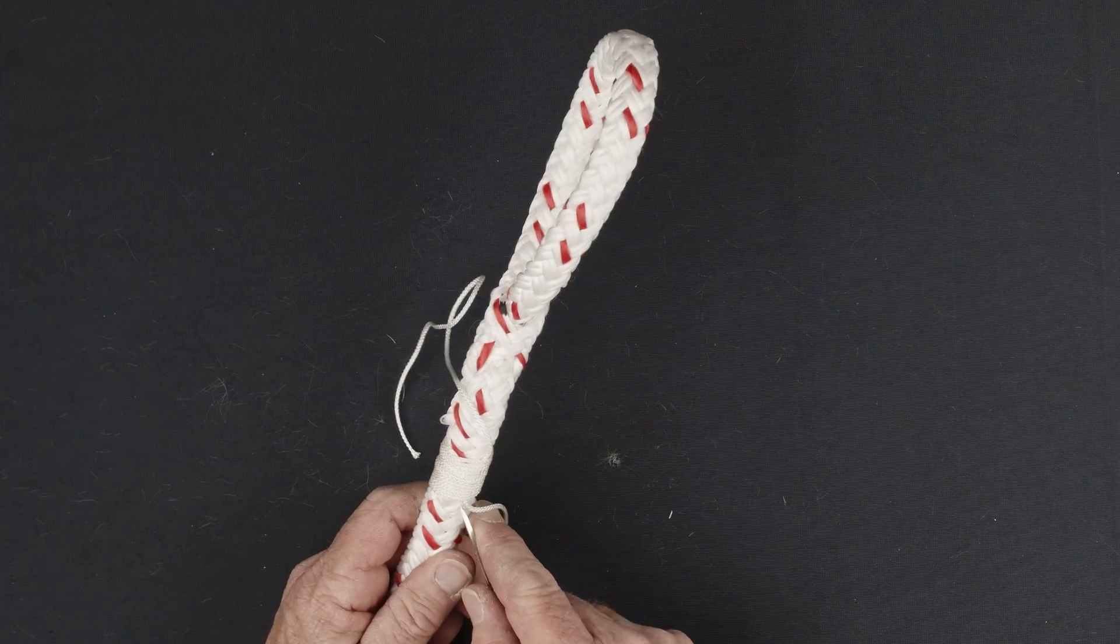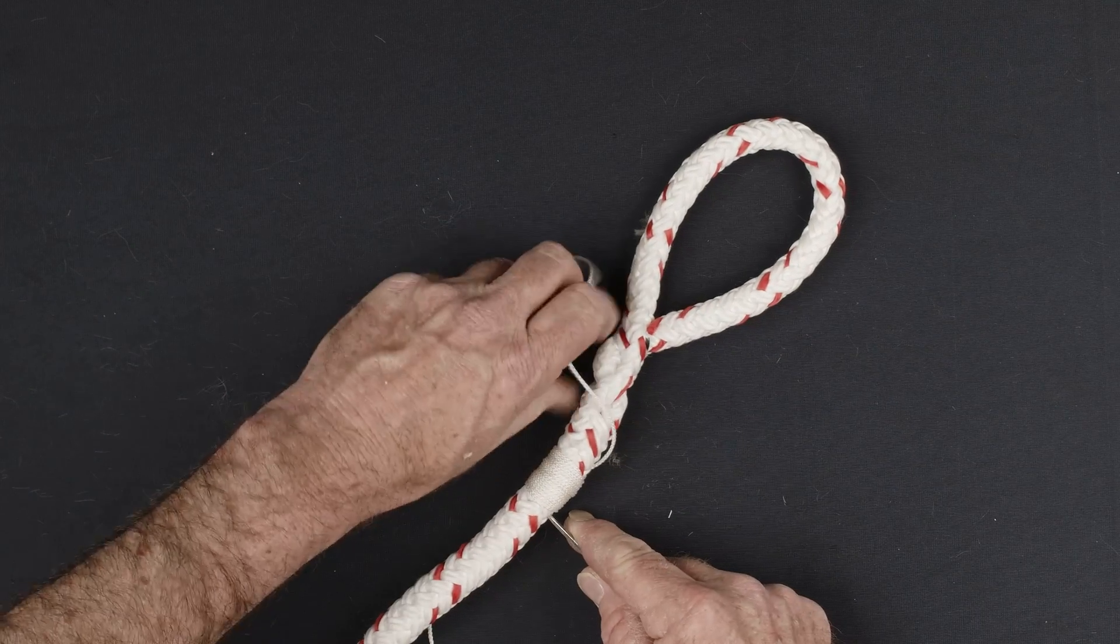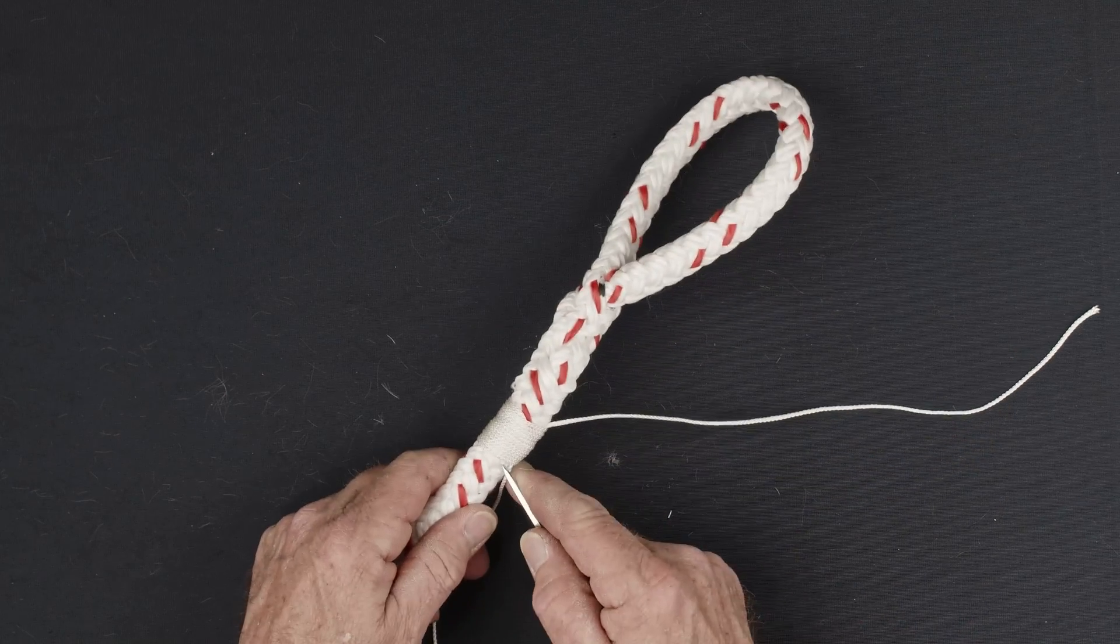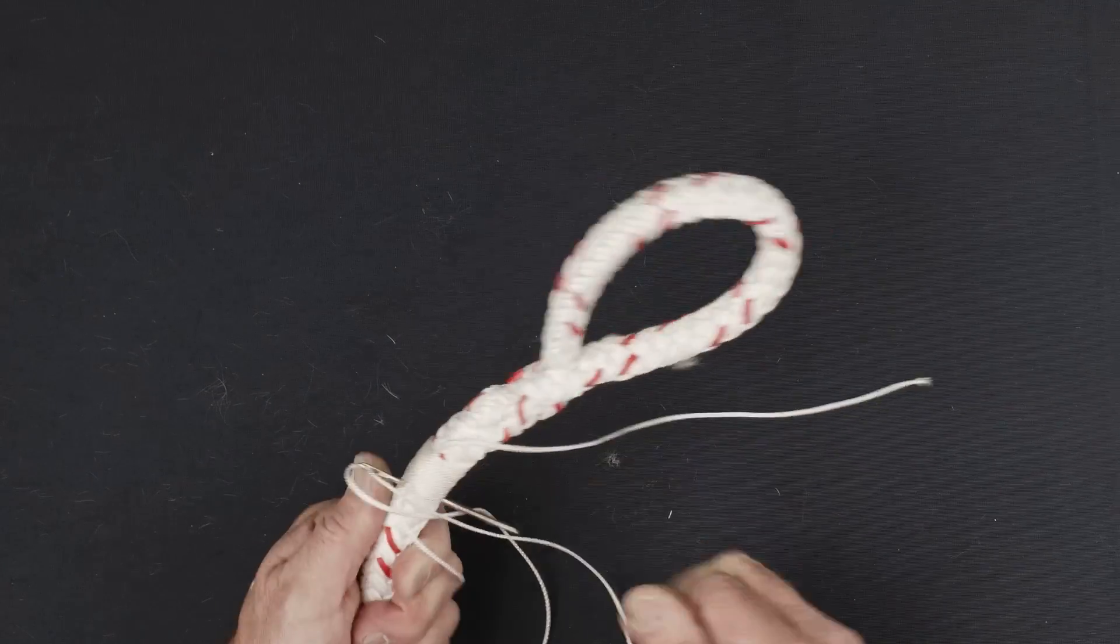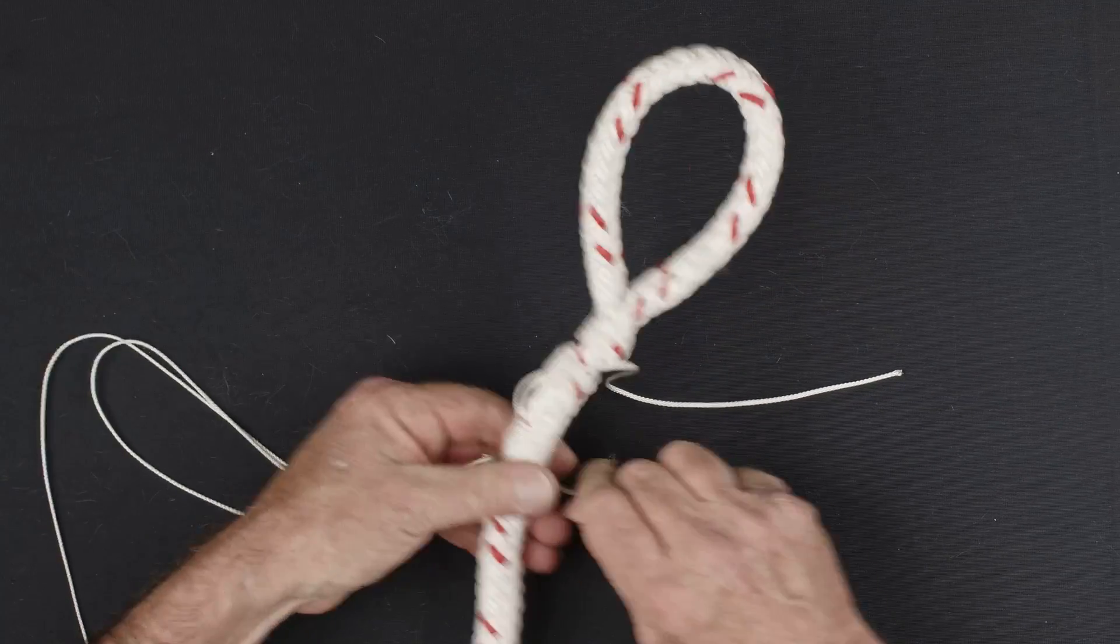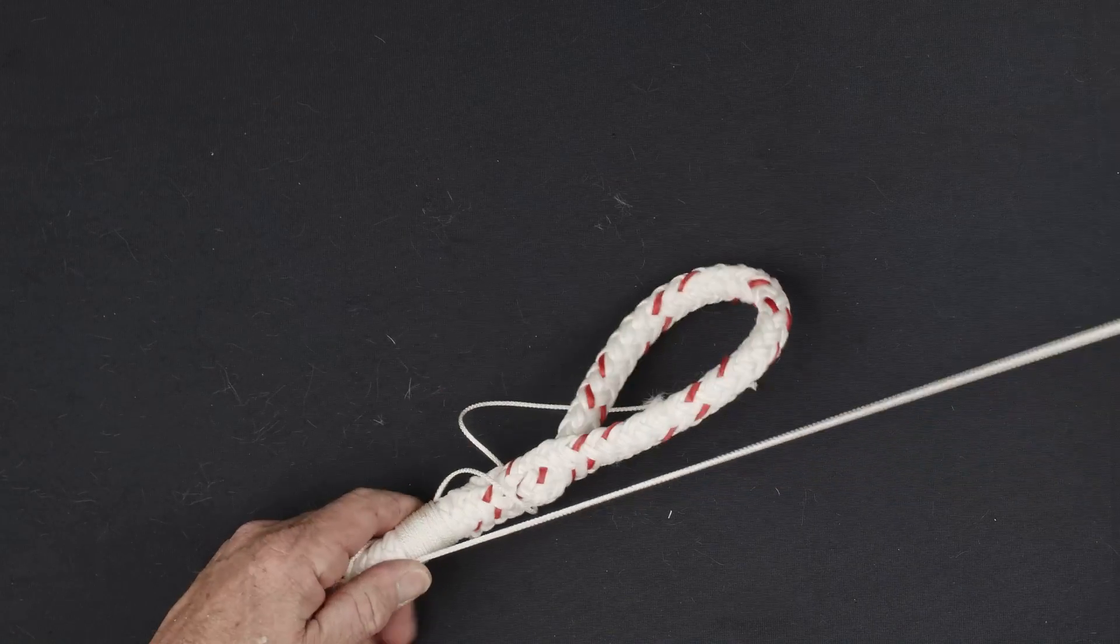Position the needle on the center of your whipping twine and pass the needle through the center of the rope at the location where the twine exits the whipping. Hold the twine tight, leaving a short tail exposed on the opposite side of the rope.